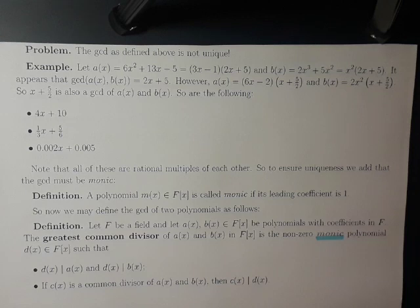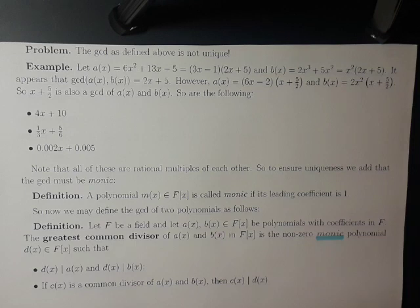For example, let a be 6x squared plus 13x minus 5, and let b be 2x cubed plus 5x squared, both considered as polynomials with rational coefficients. We can see that a factors as 3x minus 1 times 2x plus 5, and b factors as x squared times 2x plus 5. So it would appear that the GCD of a and b is equal to 2x plus 5.